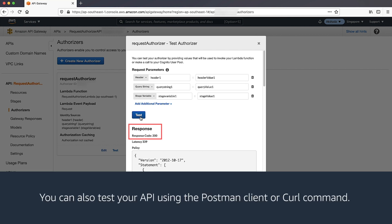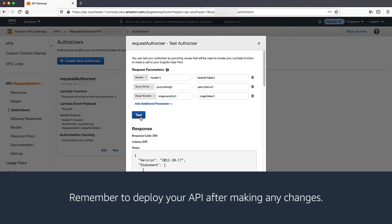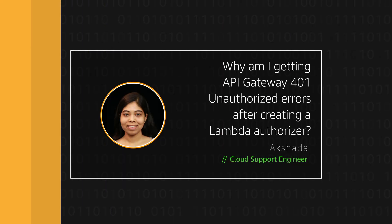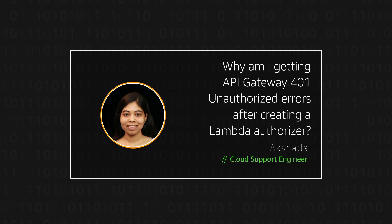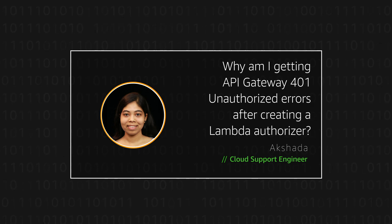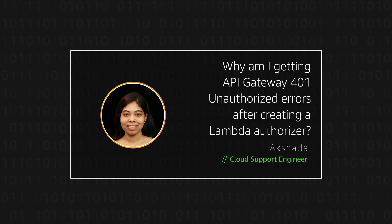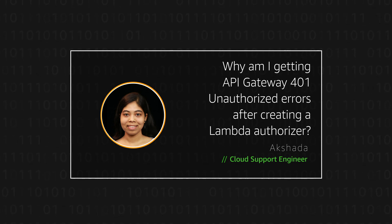You can also test your API using the Postman client or curl command. Remember to deploy your API after making any changes. Now you know about the possible reasons for getting 401 unauthorized errors when using a Lambda authorizer and how to resolve them. Thanks for watching, and happy cloud computing from all of us here at AWS.